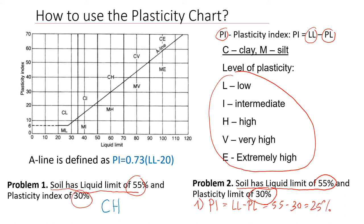Now we're going to look at the chart and find the liquid limit of 55 as we did before, and we will find a plasticity index of 25 percent somewhere here. So the point will actually be below the A-line, which means that this particular soil from Problem 2 is going to be silt, and the classification of that soil will be MH.